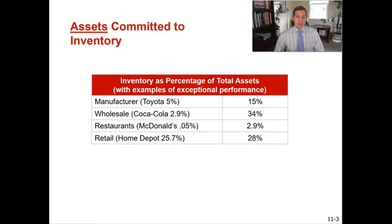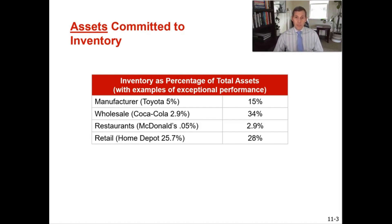Looking at how Home Depot compares to other industries: manufacturers generally have around 15% tied up in inventory versus total assets, and Toyota is at about 5%, making them a top performer — they use their cash for other things. Restaurants generally don't have a lot of inventory; on average about 3% of their assets are tied up in inventory.